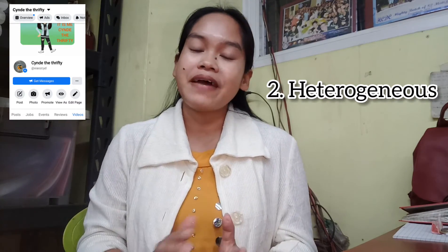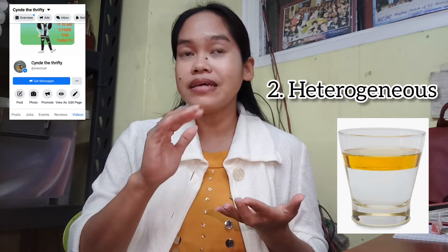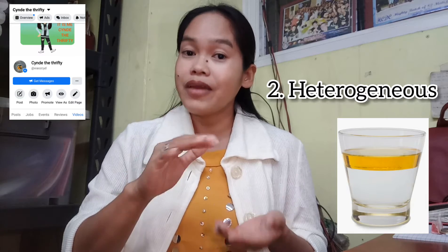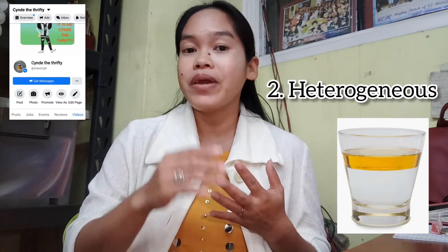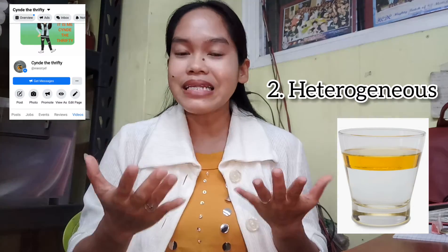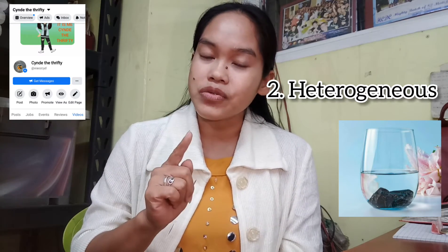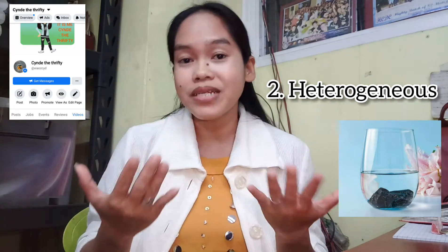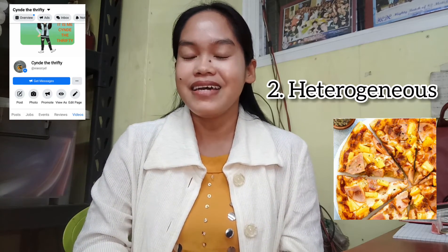Another example of a heterogeneous mixture is oil and water. When you add oil into water, you can still identify them because oil and water separate from each other — water is denser than oil, so the oil floats on top and water stays at the bottom. You can still identify where the oil is and where the water is. Another example is stones and water — when you put small stones into water, you can still see and identify the stones from the water.